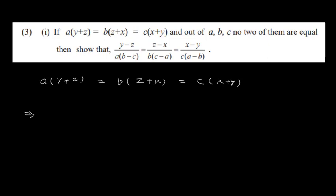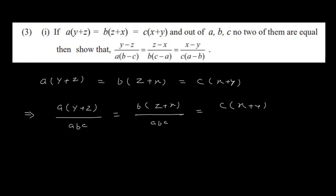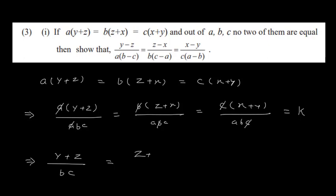So: a(y+z) = b(z+x) = c(x+y). Dividing each by abc: (y+z)/bc = (z+x)/ac = (x+y)/ab = k. By the theorem on equal ratios, we can now work with these ratios.